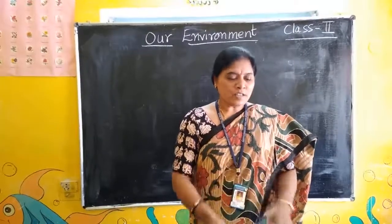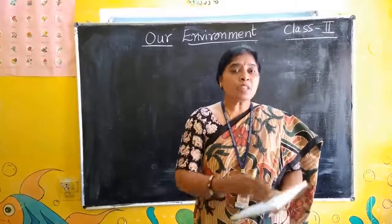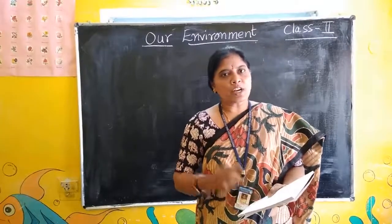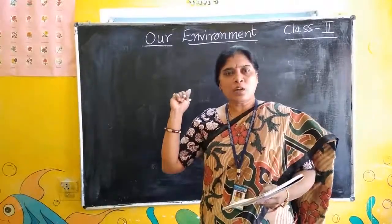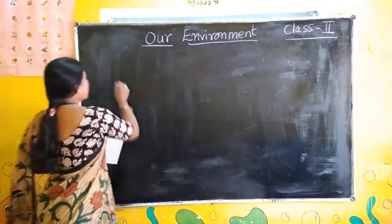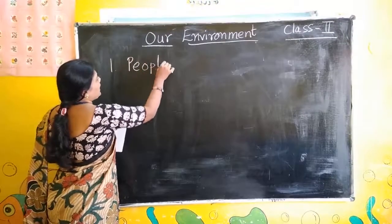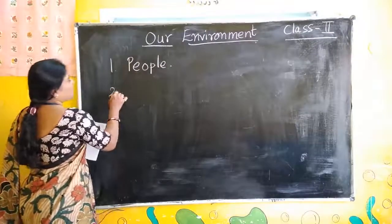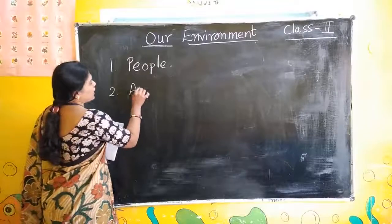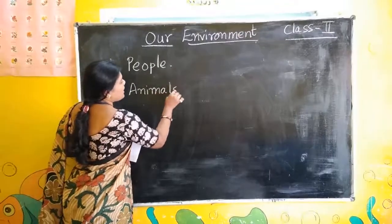So read that lesson. Now I am going to give you some important words — you learn those with spellings. I am writing on the board. Look at the board and note it in your notebook. People: P-E-O-P-L-E, People. Animals: A-N-I-M-A-L-S, Animals.